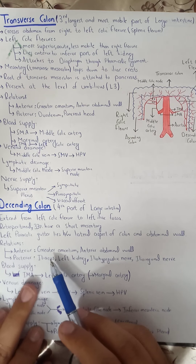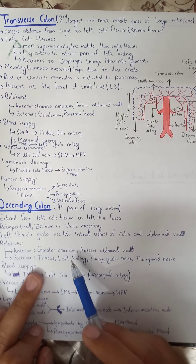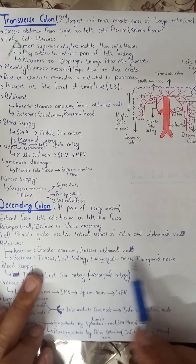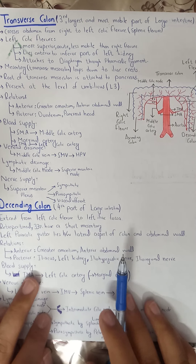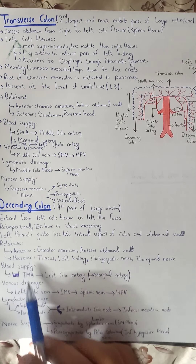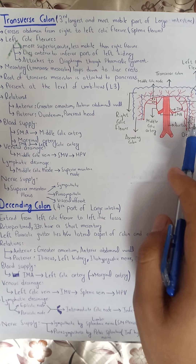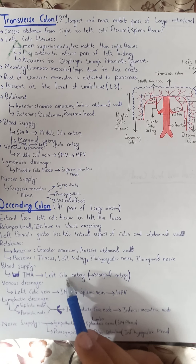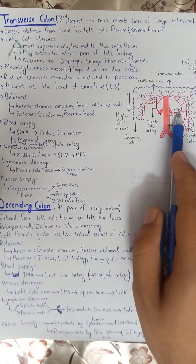Posteriorly, the descending colon is related to the iliacus muscle, left kidney, and the iliohypogastric and ilioinguinal nerves — the mirror image of the ascending colon's posterior relations. Blood supply: it is hindgut, so supplied by the left colic artery from the inferior mesenteric artery, forming part of the marginal artery. Venous drainage goes to the inferior mesenteric vein, then to the splenic vein, then into the hepatic portal vein.